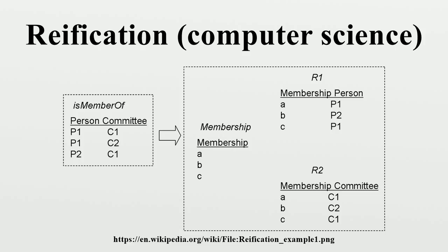Reification in Unified Modeling Language: UML provides an association class construct for defining reified relationship types. The association class is a single model element that is both a kind of association and a kind of class. The association and the entity type that reifies it are both the same model element. Note that attributes cannot be reified.